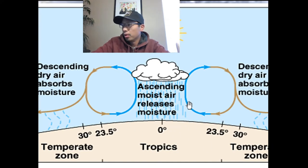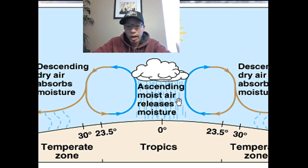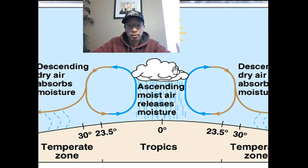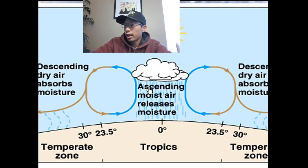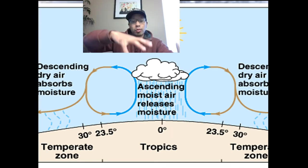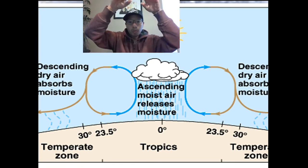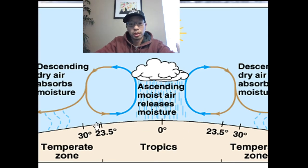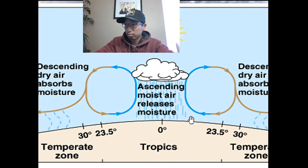Here you can see two Hadley cells — one at the equator and one toward the north and south poles. As the really warm air rises, warmth also equals more evaporation. The rising air has a lot of moisture in it, and as that moisture gets into higher parts of the atmosphere, the change in air pressure causes that water to be released. The evaporated water condenses into clouds, and we get precipitation — that's why you see so much rain in equatorial rainforests.